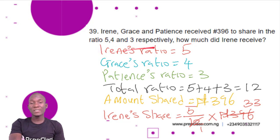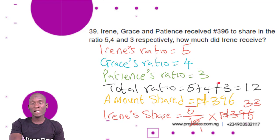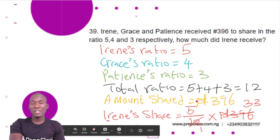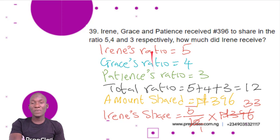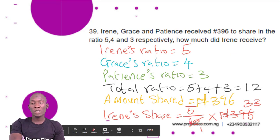From the question, Irine's ratio is 5, Grace's ratio is 4, and Patience's ratio is 3. The total ratio is 5 plus 4 plus 3, which gives us 12. The amount shared is 396 Naira. Irine's share equals Irine's ratio over total ratio multiplied by the total amount shared. So we have 5 over 12 multiplied by 396.